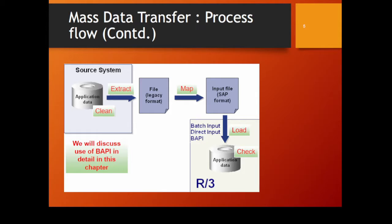You can see the whole process picture on the screen. First, here is a source system from where we extract our file and find our data in the legacy file format. Then we make a file according to the SAP format. After creation of the file, we load it using batch input or direct input BAPI. There are two upload techniques: batch input and direct input, which is called BAPI. After loading, we commit and save the data directly into the application data or ERP R3.